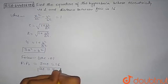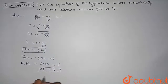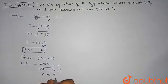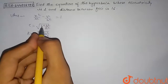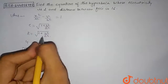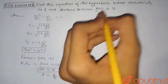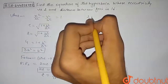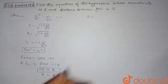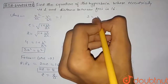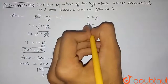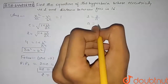Equating with 16: 2ae = 16, so ae = 8. Since eccentricity e = 8/a, we substitute: 2 = 8/a.